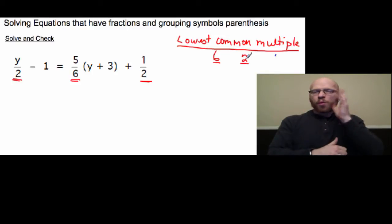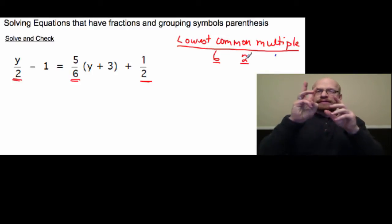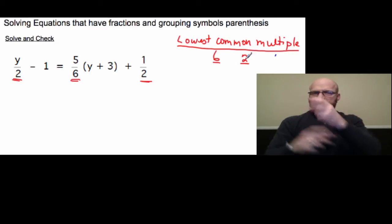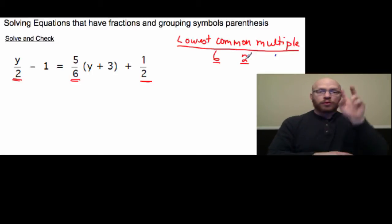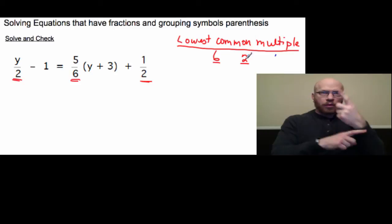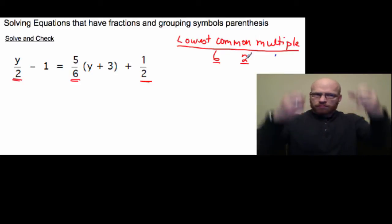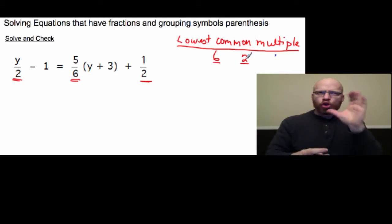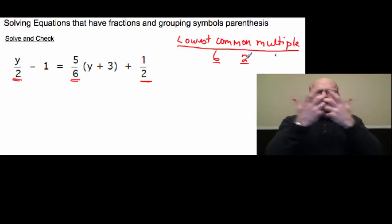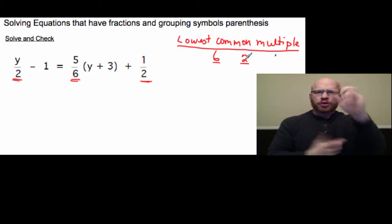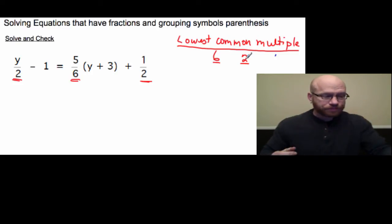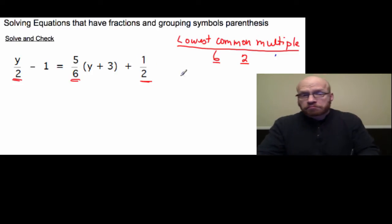With these two denominators, we have 6 and we have 2. So we're going to find the multiples of 6 and the multiples of 2: 6 times 1, 6 times 2, 6 times 3, and then 2 times 1, 2 times 2, 2 times 3, and so forth. And we'll look for different multiples that match across the two lists.